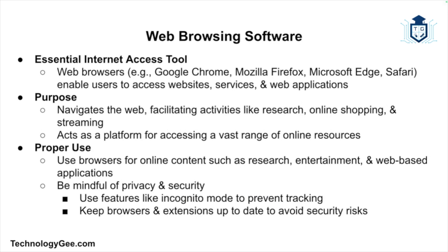Next, let's talk about web browsing software. Web browsers are essential tools for accessing the internet, and examples include Google Chrome, Mozilla Firefox, Microsoft Edge, and Safari. They're used to navigate the web, allowing users to access websites, online services, and web applications, and provide the platform for tasks ranging from research to online shopping, streaming, and much more. You want to use web browsers for accessing online content, whether it's research, web-based applications, or entertainment. Be aware of privacy and security concerns — use features like incognito mode or private browsing to prevent tracking, and keep your browser and extensions up to date to protect against security vulnerabilities. Web browsers are fundamental to almost every computer-based activity, offering access to a wide range of resources and services.